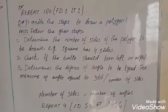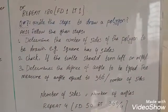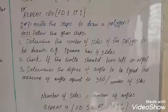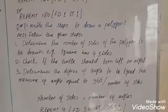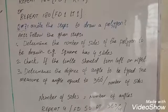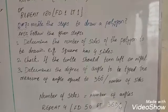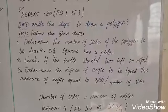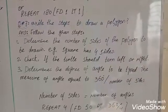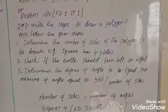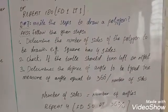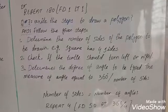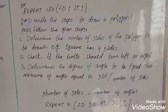Question 7: Write the steps to draw a polygon. Answer: Follow the given steps. First, determine the number of sides of the polygon to be drawn. Example: square has four sides. Second step: check if the turtle should turn left or right.